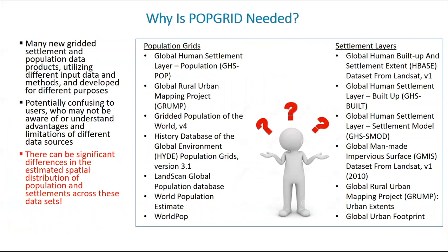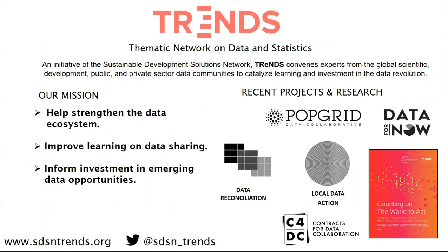Why is PopGrid needed? Basically, what we've seen in the last decade is a proliferation in the number of data products — many of which we'll learn about today, both on the population grid side and settlement layer side — and this causes confusion on the part of users as to which dataset to use for what types of applications. On top of this, there can be significant differences in the estimated population distribution and population counts across these datasets depending on what scale you're using the data. SDSN Trends is a thematic network on data and statistics, an initiative of the Sustainable Development Solutions Network that convenes experts from global scientific, development, and public-private sector data communities to catalyze learning and investment in the data revolution.